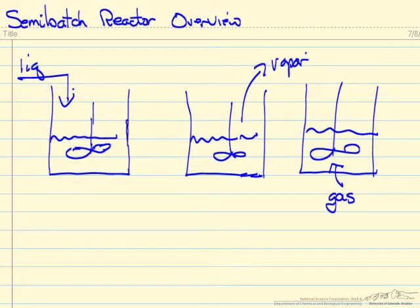One of the common types of reactors is a semi-batch reactor, and here we'll briefly overview what that means and why it might be used.